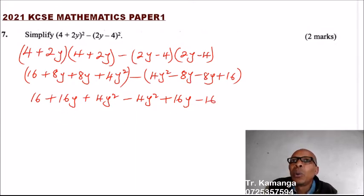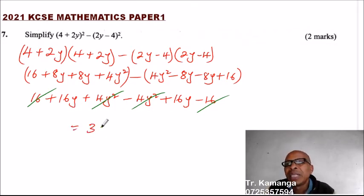So what you do here is 16 minus 16, that will go. Then we have 4y² and 4y² minus, that will go. So it means you end up with 16y plus 16y, that should give you 32y. So that is the answer to that.